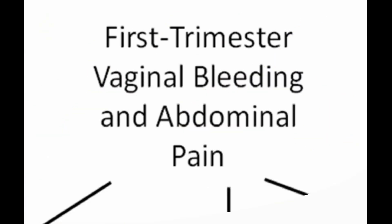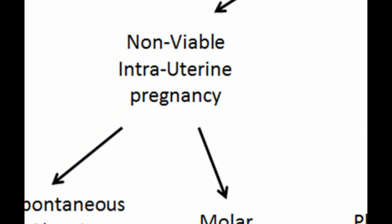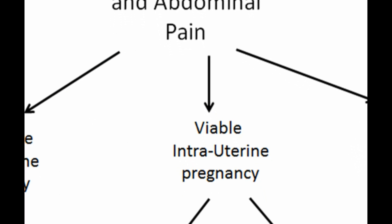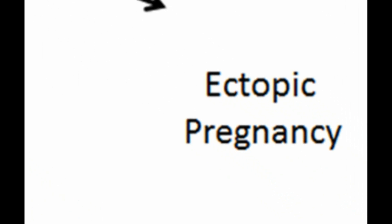When a patient presents with first trimester vaginal bleeding and abdominal pain, it is essential to determine the location of the pregnancy. This could be a non-viable intrauterine pregnancy — either a spontaneous abortion or a molar pregnancy — or still a viable intrauterine pregnancy with physiologic implantation bleeding or a subchorionic hemorrhage. It is very important to consider ectopic pregnancy as a possible cause, as missing one can lead to maternal morbidity and mortality.